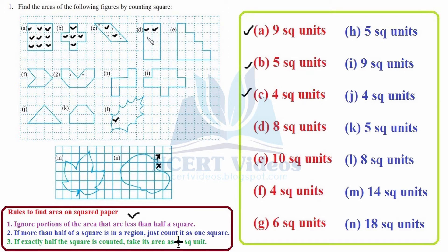For part D, this is a rectangle. Counting: two, three, four, five, six, seven, and eight — eight complete squares — therefore the area is 8 square units.